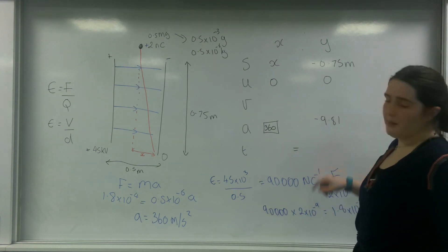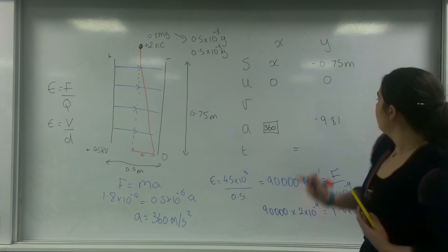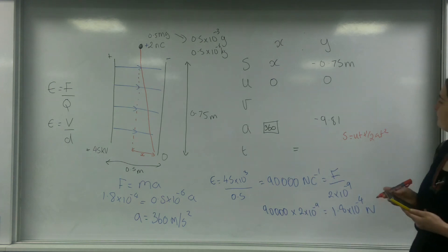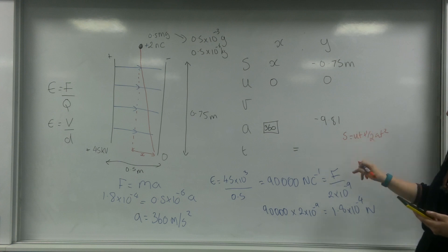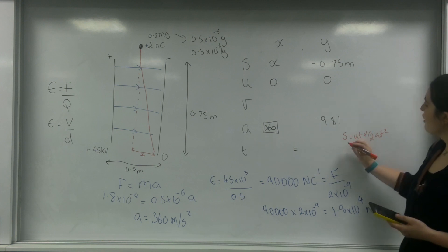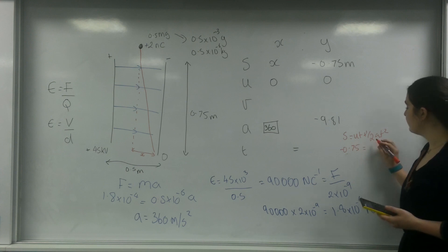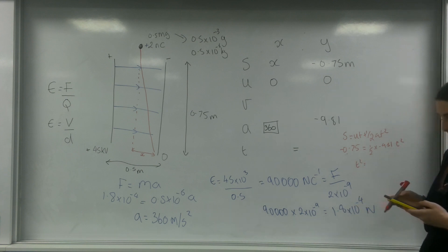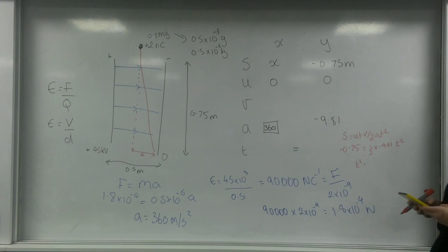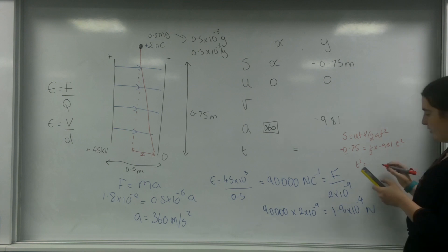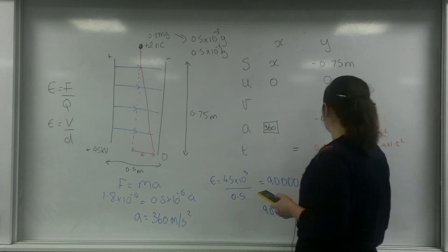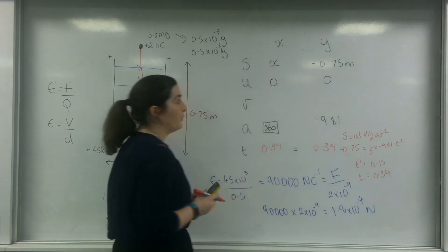So let's do my SUVAT to work out my time. I'm going to use S equals ut plus half at squared. Since u is 0, I have minus 0.75 equals half times minus 9.81 times T squared. So T squared equals 0.15, which means T is 0.39 seconds.